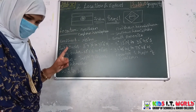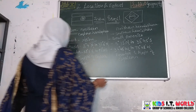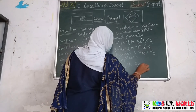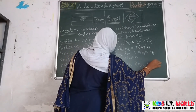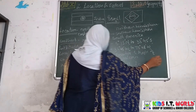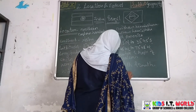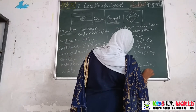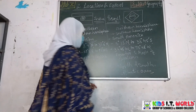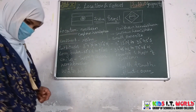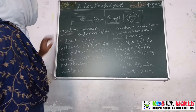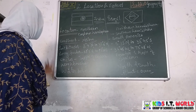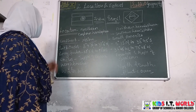Brazil is surrounded by the North and South Atlantic Ocean. These are the comparisons of Brazil and India in location, extent, and their geographical features.